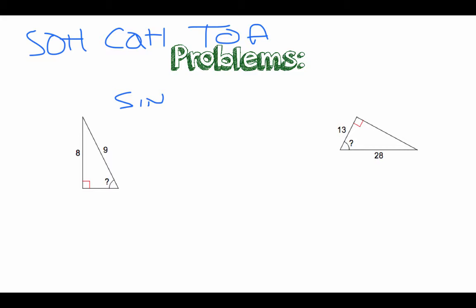So the first thing you guys are going to do when you guys clear the memory is you guys are going to push second sine, and then you guys are going to plug in the 8 over 9. And what that's going to do is that's going to give you guys a degree measure for that angle at the bottom.